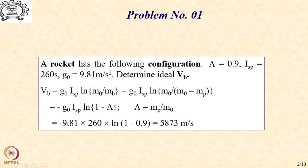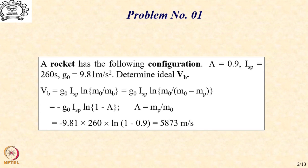It is a simple task to substitute these numbers: 9.81 into 260 — that is G0·ISP — and the natural logarithm of 1 minus 0.9, which is 0.1. This results in a number of 5873 meters per second. My suggestion is you can also independently carry out this task once you have gone through this session completely, so that you become familiar and comfortable with these expressions.